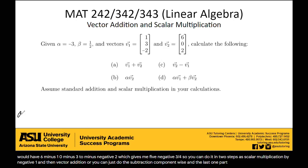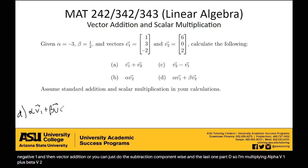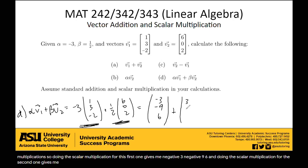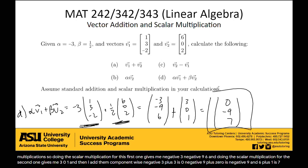And the last one, part D. So I'm multiplying alpha v1 plus beta v2. So I have negative 3 times the vector 1, 3, negative 2, plus 1 half times the vector 6, 0, 2. So first, I'm going to do my scalar multiplications. Doing the scalar multiplication for this first one gives me negative 3, negative 9, 6. And doing the scalar multiplication for the second one gives me 3, 0, 1. And then I add them component-wise. Negative 3 plus 3 is 0, negative 9 plus 0 is negative 9, and 6 plus 1 is 7. So that's my answer to part D.